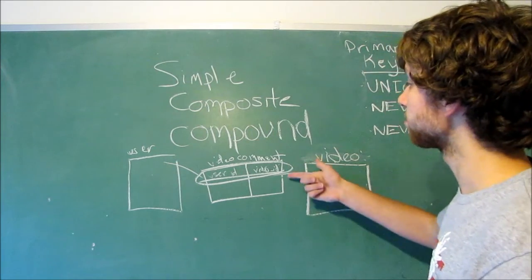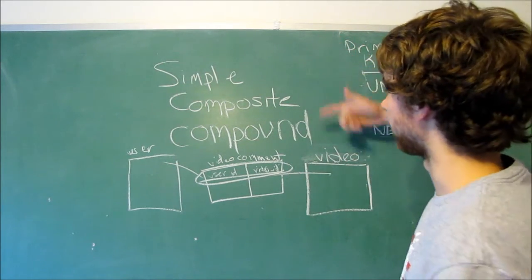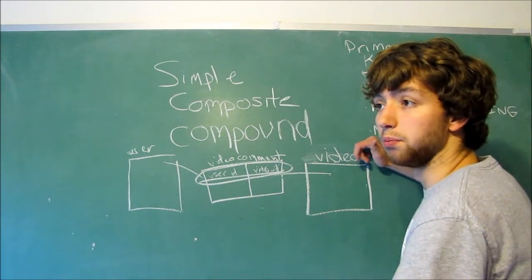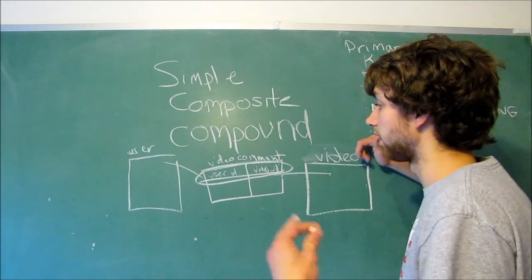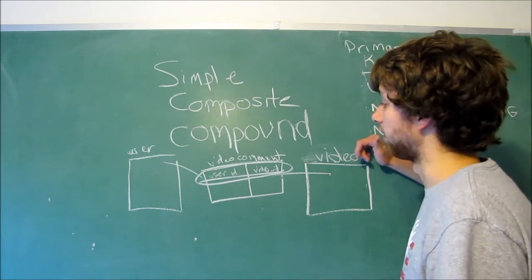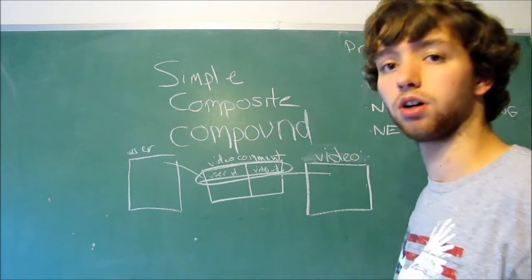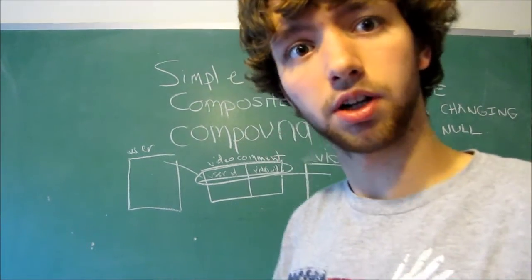But, anyways, this would be an example of a, we could add another column in here to make it unique. We could have the date and the message. So, the message has to be unique and the user ID has to be unique and the video ID has to be unique. That would be a composite key. A compound key, let me think of an example real quick.